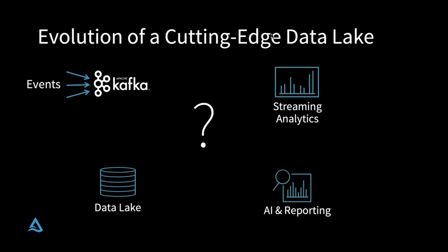A pretty common pattern: you've got a stream of events coming into something like Apache Kafka, and your mission is to do two things. You need to do streaming analytics so you can know what's going on in real time, and you also want to do AI and reporting where you look at a longer period of time, do longitudinal analysis, look at history and trends, and make predictions. Spark has really good APIs for reading from Apache Kafka — you can use DataFrames, Datasets, and SQL to do aggregations, time windows, and come up with your streaming analytics.